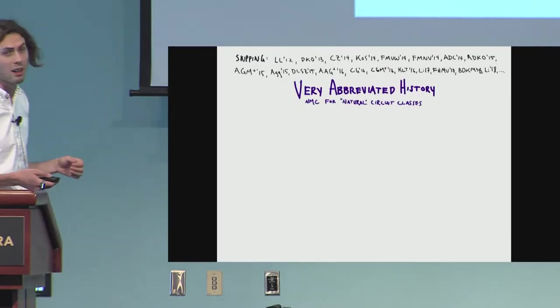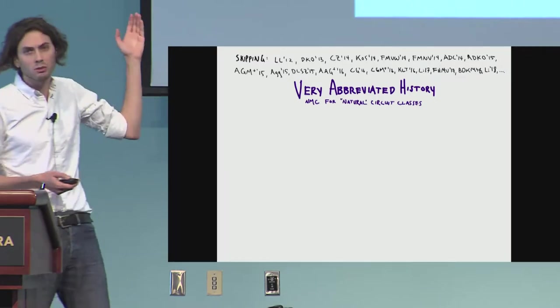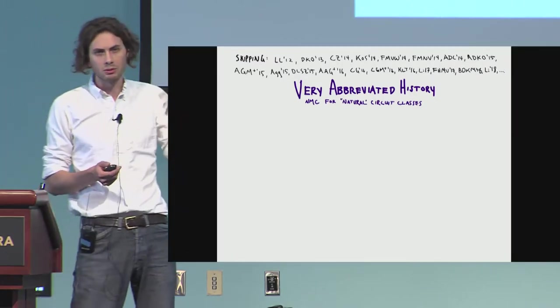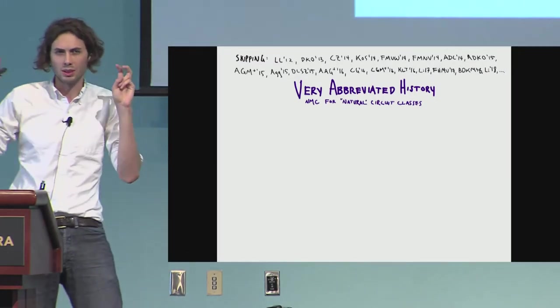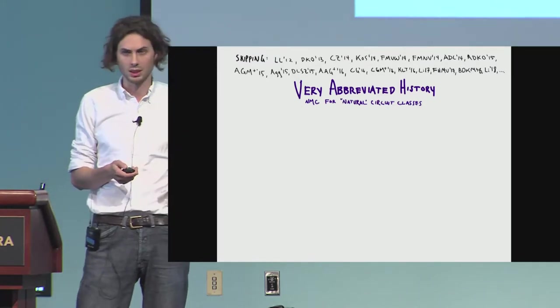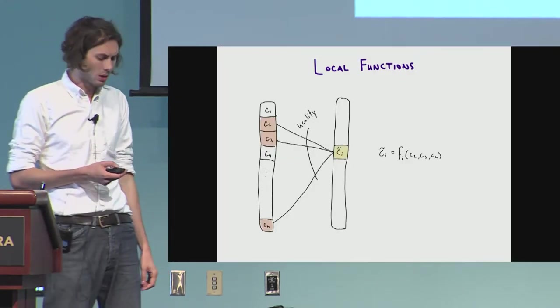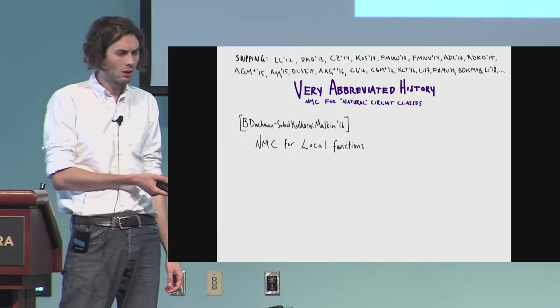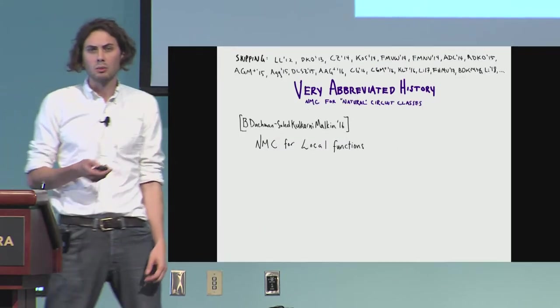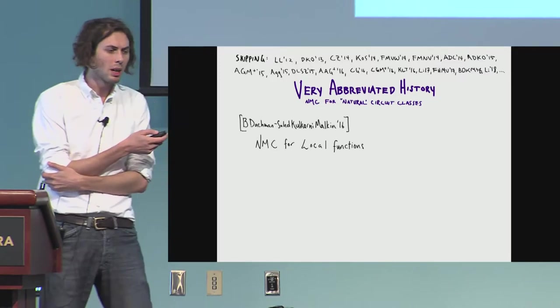What sorts of codes do we have like these? There's a ton of work on other tampering classes. I'm just going to focus on things that correspond to natural complexity classes. So in 2016, with Donna Dachman-Soled, Mukul Kulkarni, and Tal Malkin,